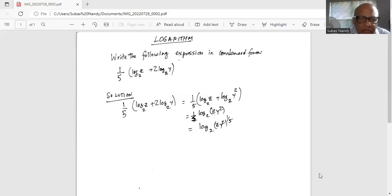And now we have a coefficient one-fifth in front of the logarithm, which can be moved out as an exponent form. So we have logarithm of z y squared exponent one-fifth to the base 2. That is your final answer.